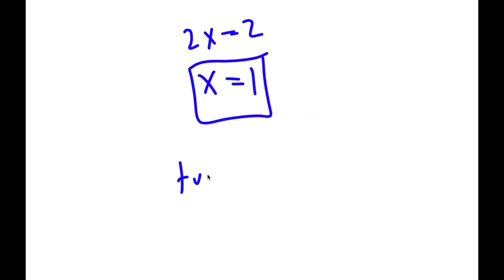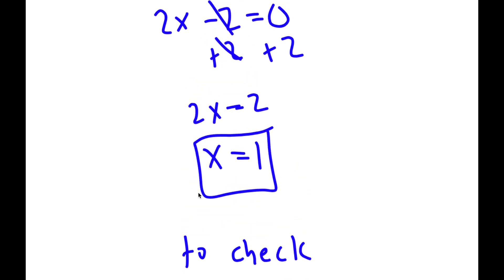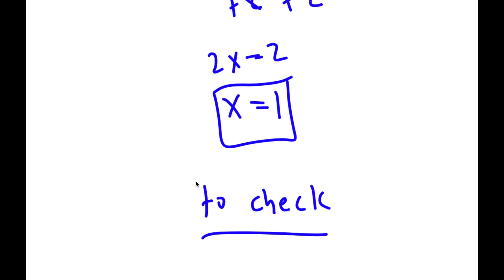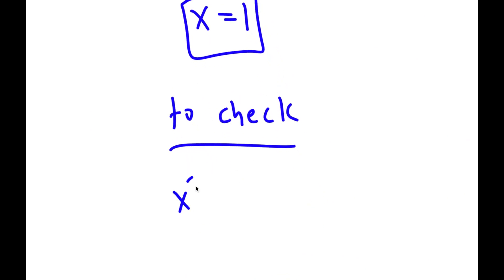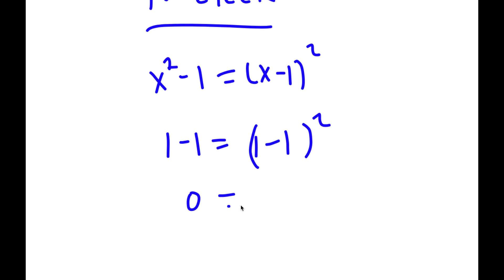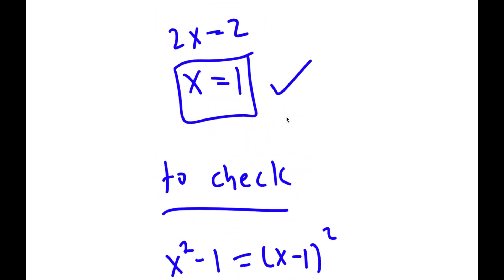Now to check: my equation was x squared minus 1 is equal to x minus 1 squared. Substituting x equals 1, I have 1 minus 1 is equal to 1 minus 1 squared. 1 minus 1 is 0, and 1 minus 1 squared is 0 squared, which is 0. So this is correct, meaning my solution is right.